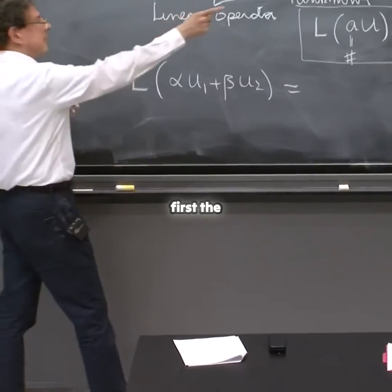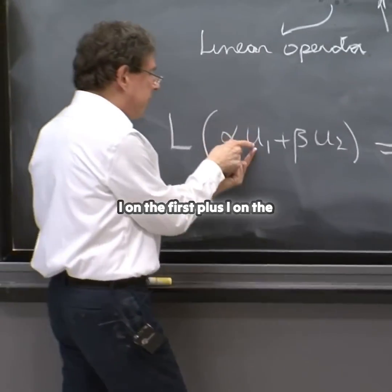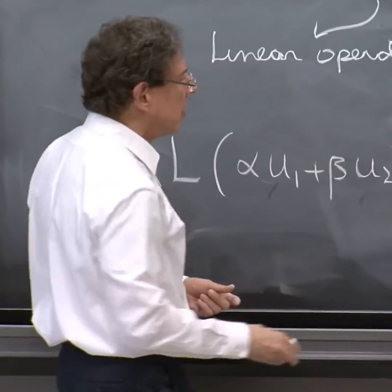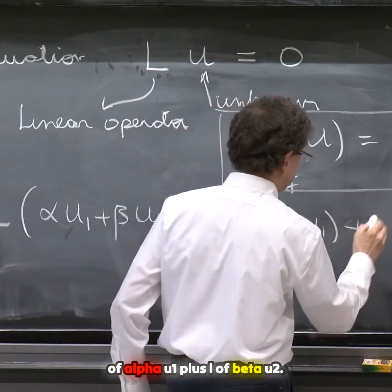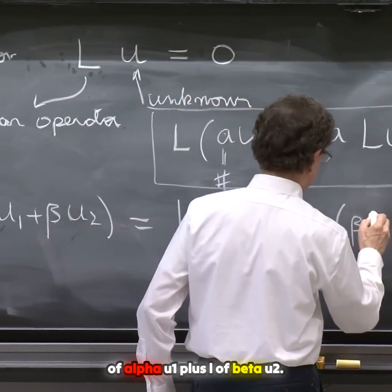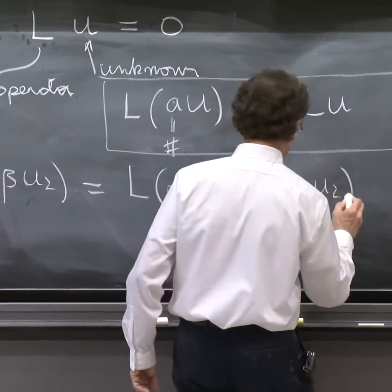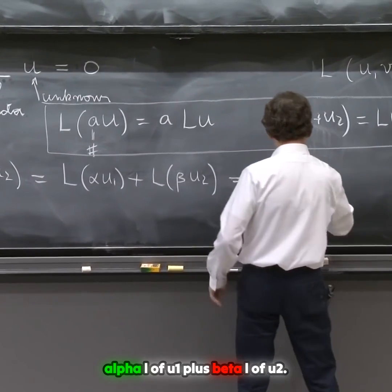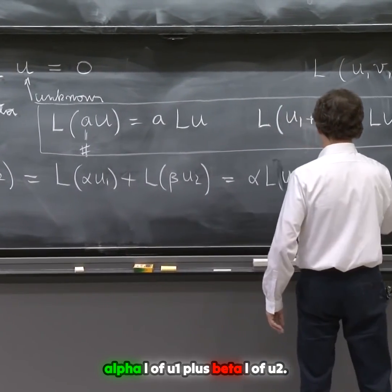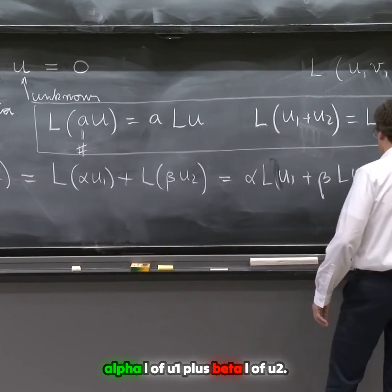You apply first the second property, L on the first plus L on the second. So this is L of alpha U1 plus L of beta U2. And then using the first property, you see this is alpha L(U1) plus beta L(U2).